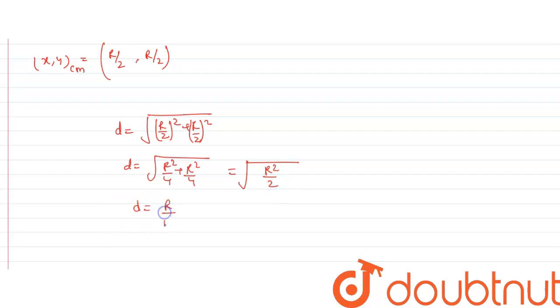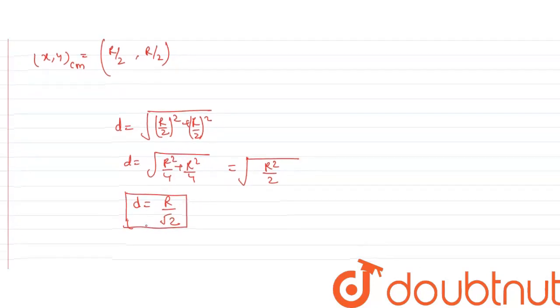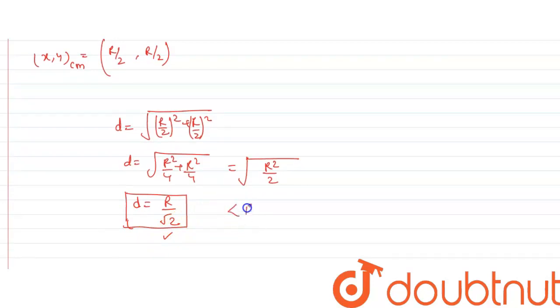So, d equal to R by root 2, so the distance of center of mass from the origin is R by root 2, which is less than R.